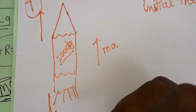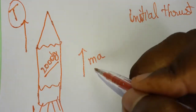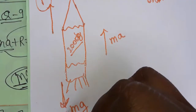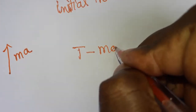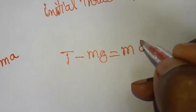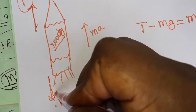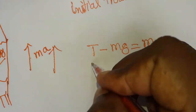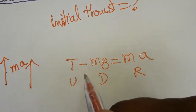The weight of the object, mg, acts downwards, and the upthrust force T acts upwards. The resultant causes the object to move up, so the equation is T minus mg equals ma. T is upwards, the object moves upwards, and weight mg acts downwards. So upwards minus downwards equals the resultant: T minus mg equals ma.